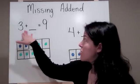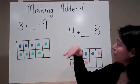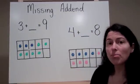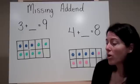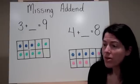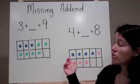So I could say 3 plus 6 equals 9. Here's another one. I have 4 plus what number equals 8. I know that one of my addends is 4, the other one is missing and my sum is 8. So I use my tens frame.